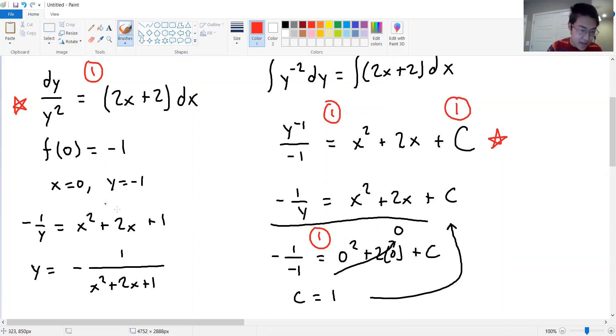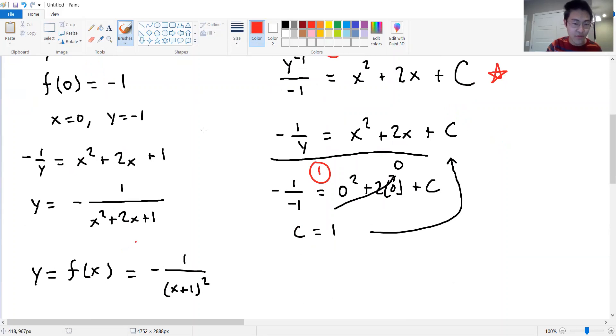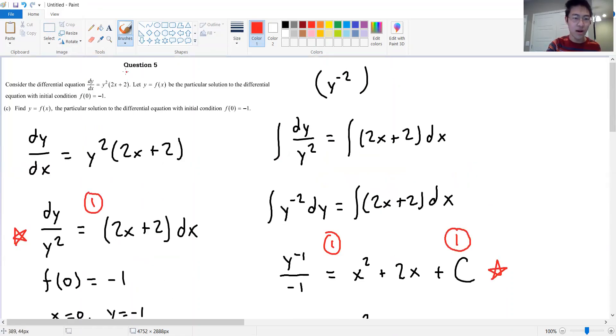And then finally, to top everything off, you're going to get that last point for actually answering the question that was originally posed and that is the general solution of the f of x. All right. So that is all for question five on the 2013 AP Calculus BC exam.